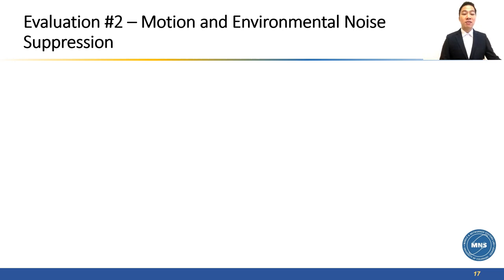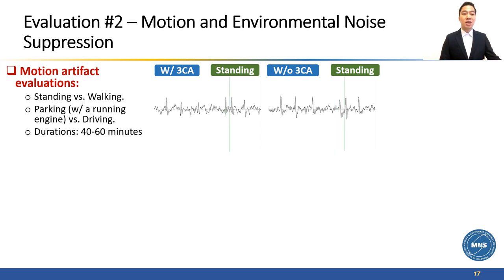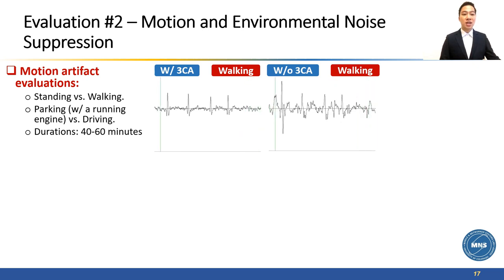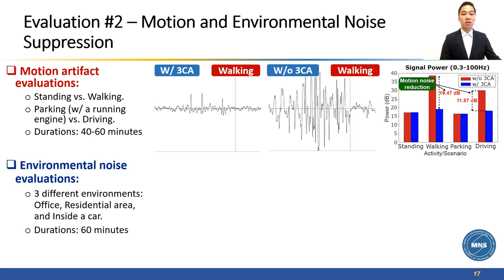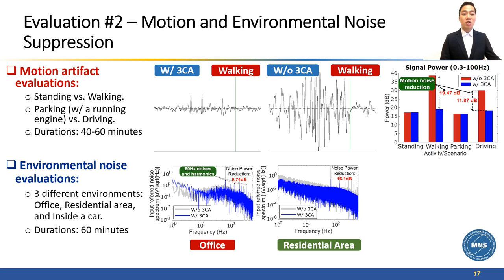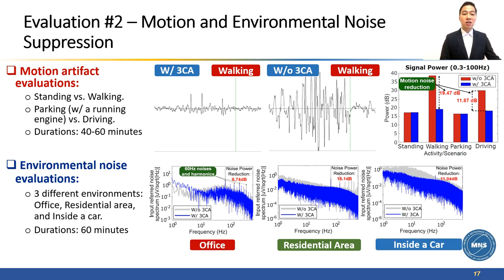In the second experiment, we evaluated the ability to withstand noisy conditions in the real world. In our motion evaluation, we compare the signal with and without 3CA during walking and driving. While standing, we can capture the eye blink clearly with and without 3CA. However, during walking, the signal is completely distorted by motion without 3CA. We can observe the similar result during driving scenario. 3CA can reduce 11 to 19 dB of the noise power introduced by motion. In our environmental noise evaluation, we compare the captured signal in three different environments: in an office, in a residential area, and inside a car. The results show that electromagnetic interference is minimized with 3CA by 9 to 16 dB. When a subject is sitting in the car, most of the environmental noise is actually coming from the motion of the car itself.